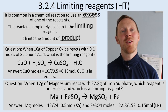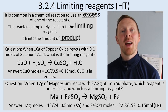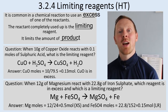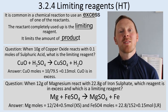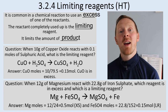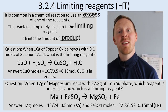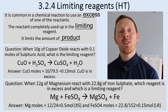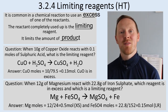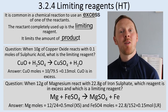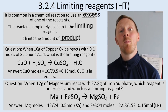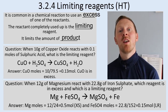We know how many moles of sulfuric acid we've got — it says 0.1 moles. So now we need to work out how many moles of copper oxide we've used. The relative formula mass of copper oxide: copper is 63.5 and oxygen is 16. The formula is CuO, so it's one of each atom, giving a relative formula mass of 79.5. So the mass, 10 grams, divided by 79.5 gives us 0.13 moles of copper oxide.